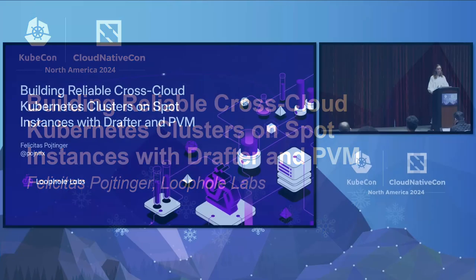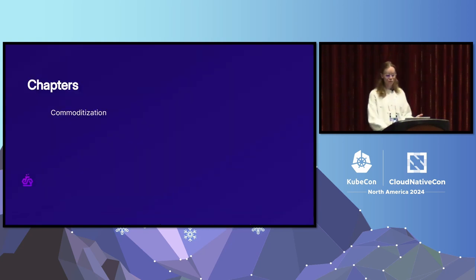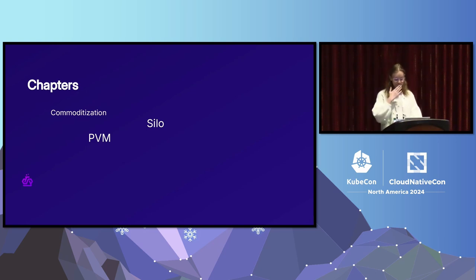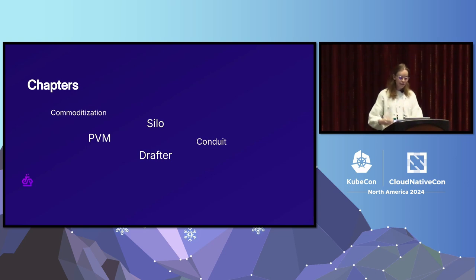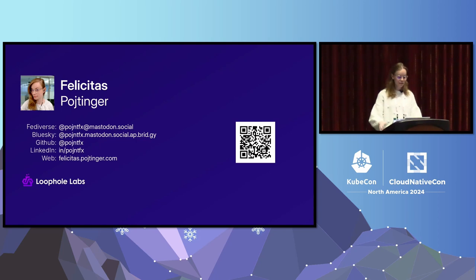Welcome everyone. Today's talk is about building reliable cross-cloud Kubernetes clusters on spot instances with Drafter and PVM. We'll start with commoditization — that fundamental idea of why you'd want to do this — then look at PVM, a copy technology for starting VMs inside VMs without hardware acceleration. We'll cover Silo, a Loophole Labs project for efficient data migration between hosts, Drafter which combines the two tools, Conduit for network migrations, and finally Architect, the actual product you can use today.